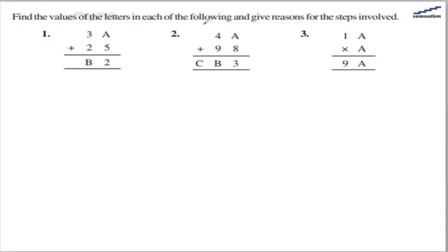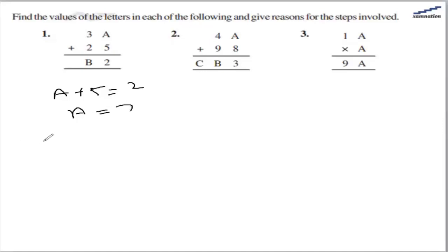We need to find the value of the letter in each of the following and give reasons for the steps involved. For the first question, 3a plus 25 gives b2. Here, a plus 5 gives 2, which is possible when a is 7. So 37 plus 25 gives 62, meaning b will be 6.